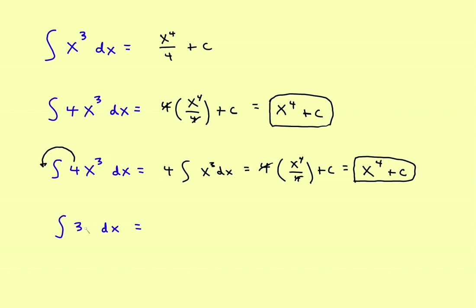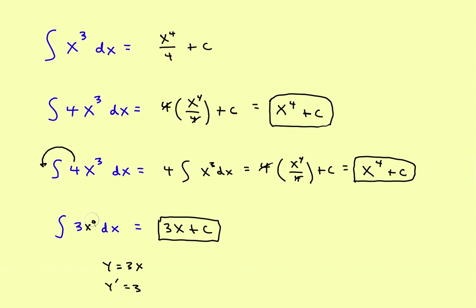The antiderivative of a constant — in this case 3 — would be 3x. The reason is if the original function had been 3x, its derivative would be 3. Going back the other way, if the derivative is 3, the antiderivative is 3x plus C. If it helps, think of the constant as x to the 0 power, since anything to the 0 is 1. Add 1 to get x to the first power divided by 1, and you get 3x plus C. In general, the antiderivative of a constant is just that constant with an x attached.